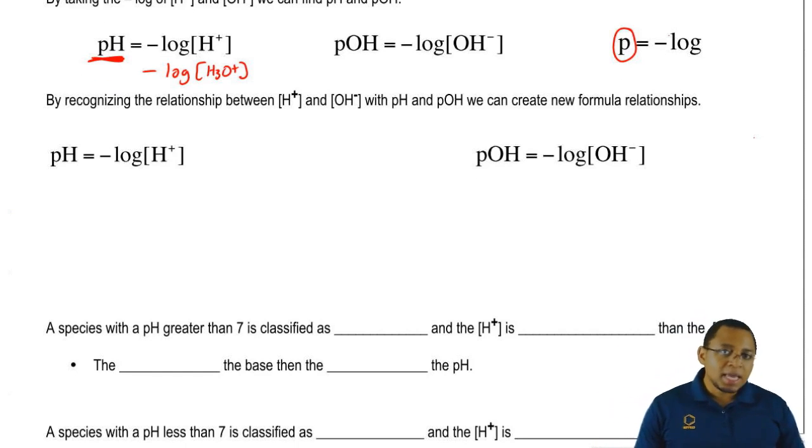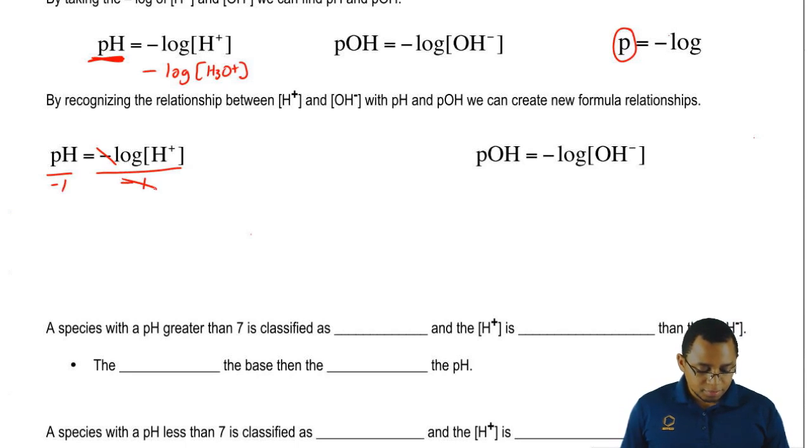So we come back here. We say that pH equals negative log of H positive. We could divide both sides by negative 1 to get rid of this negative. So negative pH equals log of H positive.